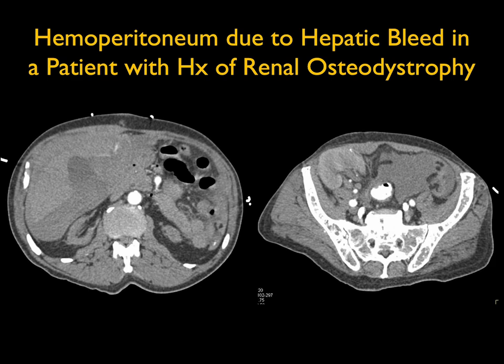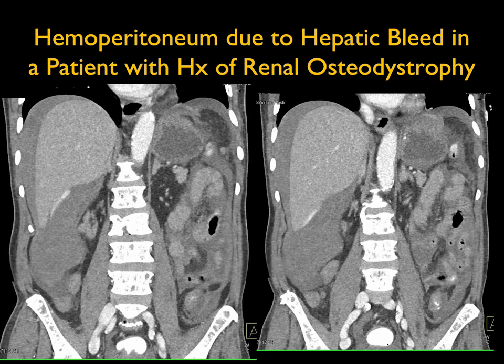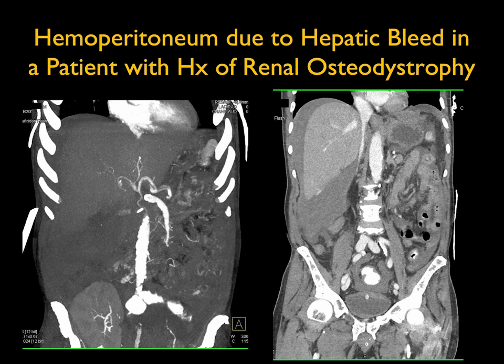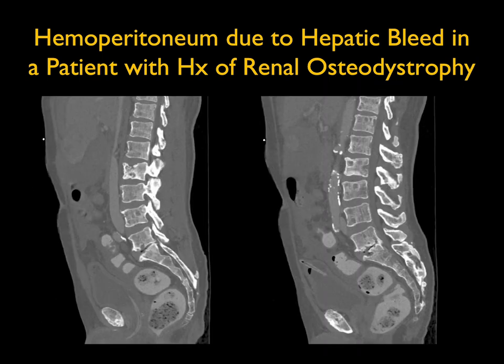I don't see a mass here but I do see active bleeding tracking around the right lobe of the liver. The renal osteodystrophy is visible in this patient with end-stage renal disease and a renal transplant. The patient did have trauma, which was likely the cause of the hepatic bleed, and the patient did well long term.